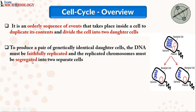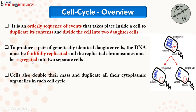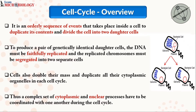During the cell cycle, cells also double their mass and replicate their contents — that is, their cytoplasmic organelles. Thus, in a cell cycle which has a complex set of cytoplasmic and nuclear processes, these cytoplasmic and nuclear processes have to be coordinated with one another during the cell cycle.